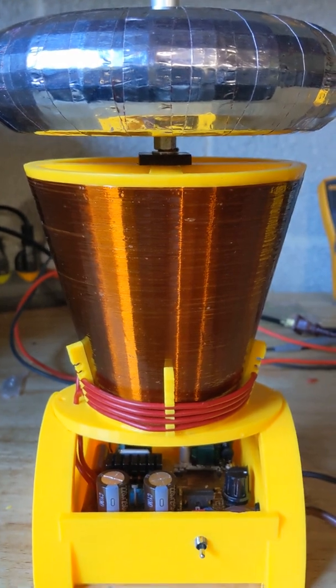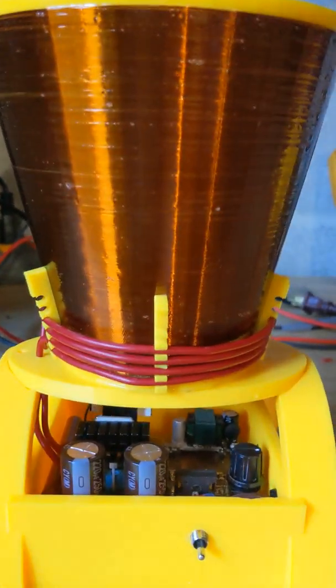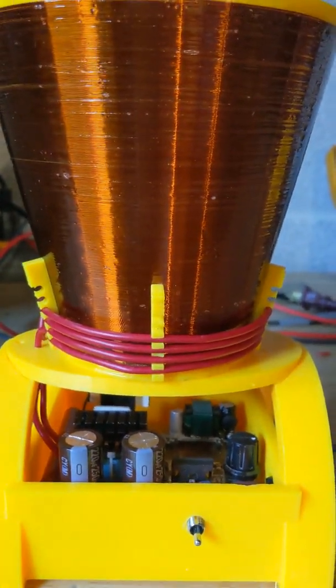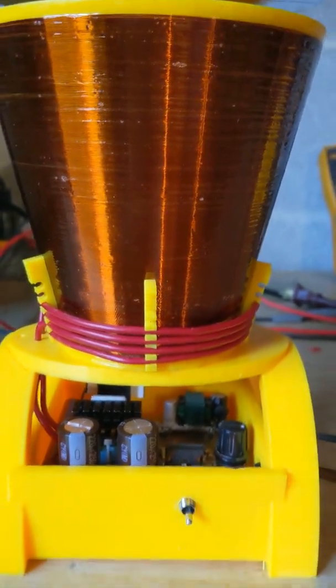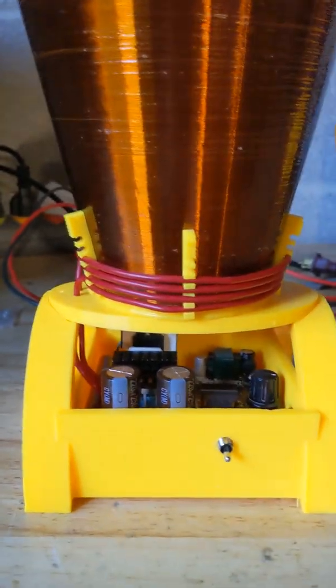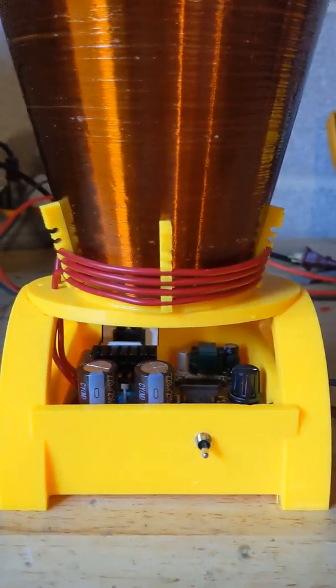So it's an inverted cone and then of course the little spacers for the primary which is just number 16 gauge automotive hookup wire and then the casing here that holds the control board.